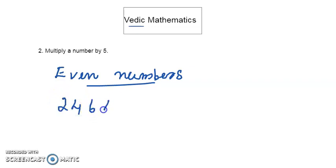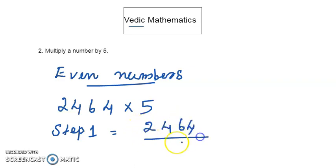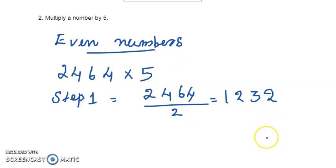For multiplying 2464 times 5, first we take half of this number. So 2464, half of that number is 1232. Then in step 2, we just put 0 at the last of this number 1232.